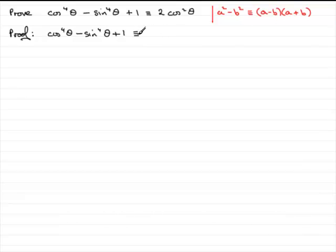So if I use this principle, I can factorize this first bit. I can say that it's (cos²θ - sin²θ)(cos²θ + sin²θ). And that, if you expanded it, would give us cos⁴θ - sin⁴θ. Don't forget though, we've got a plus 1 here, so we need to put that on the end.